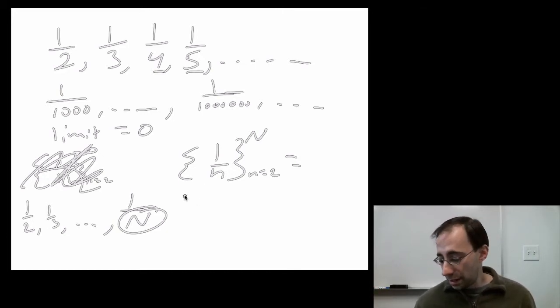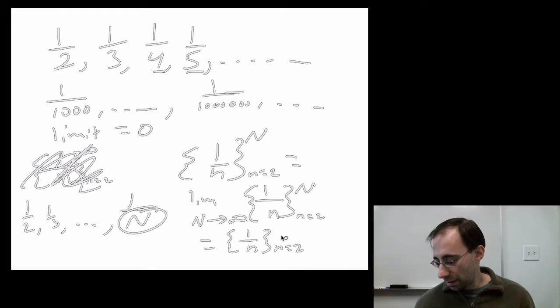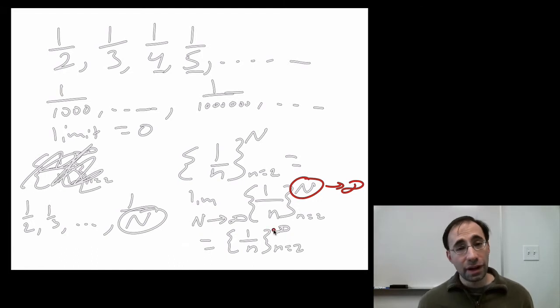So, I can write this as lim capital N goes to infinity of one over n from n equals two to N. This is the exact same thing as writing one over n from n equals two to infinity. Whenever you see infinity in the bounds of some sequence, that's the same thing as taking some variable like N and sending it to infinity. Limit as N goes to infinity is the exact same thing as just putting infinity in the bound.